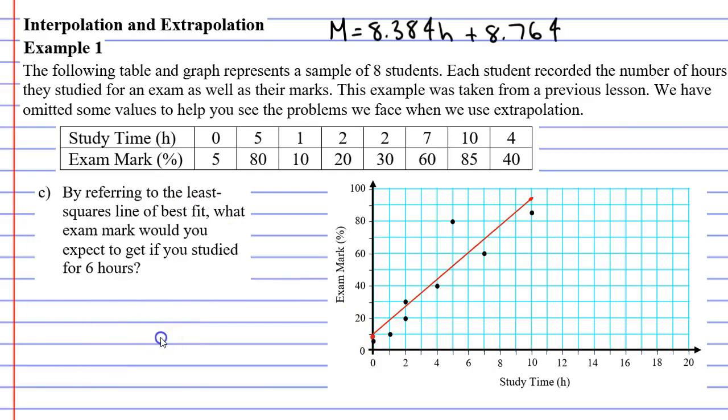All right moving on to question C now. I've just copied across this line of best fit and also our equation. It says by referring to the least squares line of best fit what exam mark would you expect to get if you studied for six hours? And all we need to do